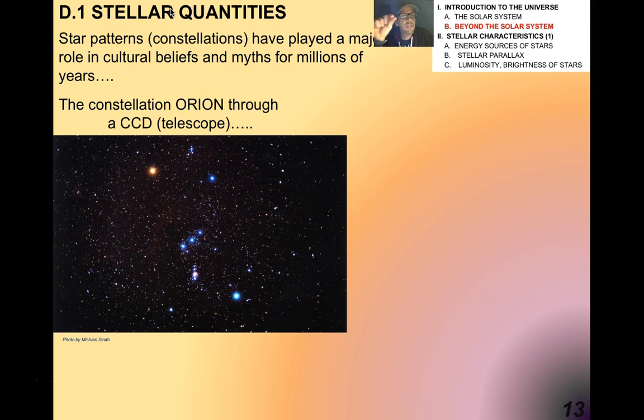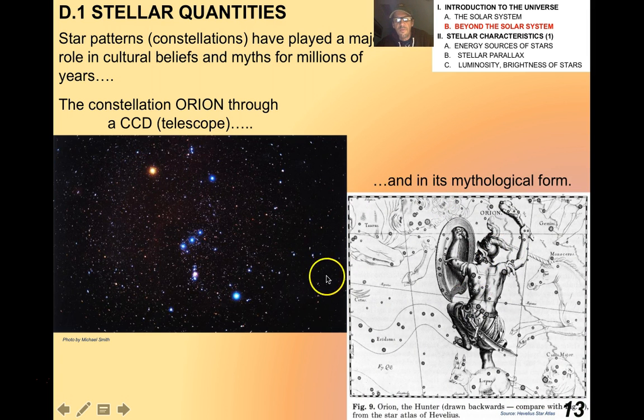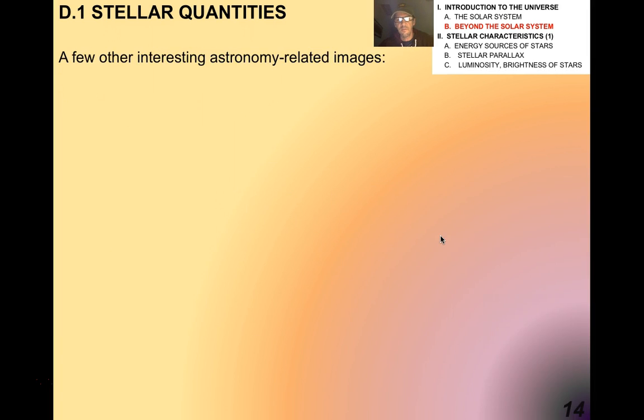Star patterns, or constellations, are just patterns in the sky that appear to look that way from our point of view. They've played a major role in cultural beliefs and myths for millions of years. For example, the constellation Orion through a telescope looks like this. Maybe you've seen Orion. In mythological form, these three stars in the middle formed his belt. These stars form his sword. He's like this badass battle hunter guy, Orion the hunter. I really like these old mythological constellation charts. They're really beautiful. It's amazing when you think about the imagination of these people to see all these animals and people. It becomes its own mythological art form.